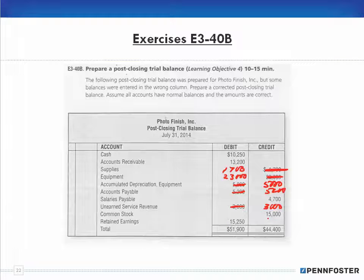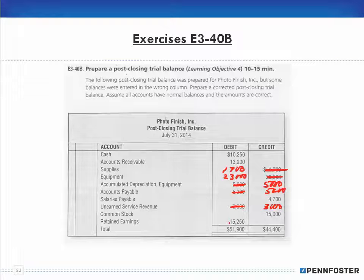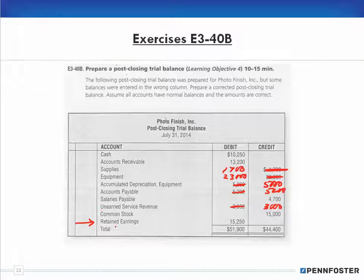For equity, common stock is 15,000. Equity accounts have a normal credit balance, so the common stock 15,000 is on the right side. For retained earnings — for all intents and purposes right now in your education at this level — we're concerning ourselves with the normal balance of the retained earnings account. Since retained earnings is an equity account and equity accounts have normal credit balances, this 15,250 should go in the credit column.